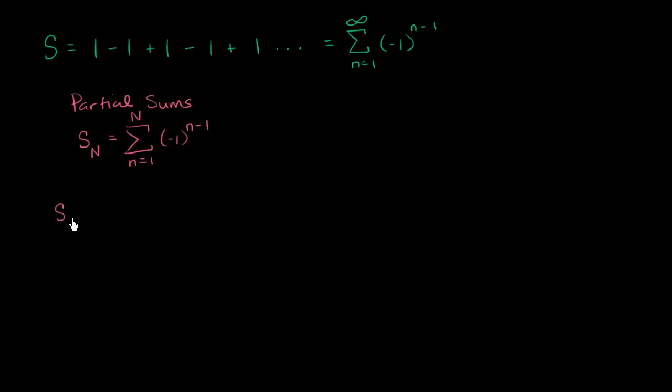So just to be clear what this means, the partial sum with just one term is just going to be from lowercase n equals 1 to uppercase n equals 1. So it's just going to be this first term right over here. It's just going to be 1.